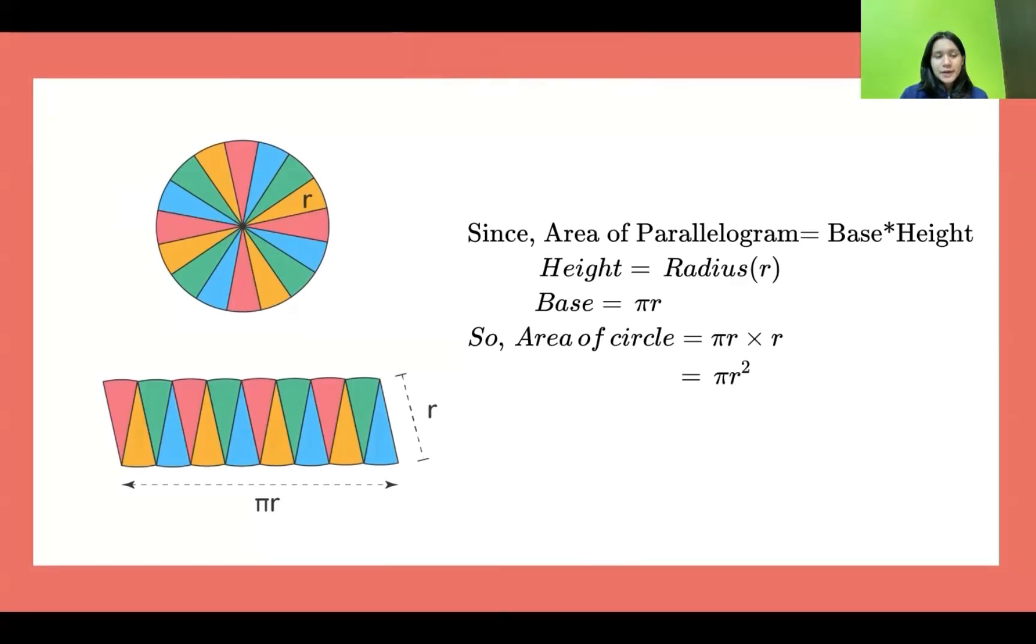In this way, by comparing the area of circle to the area of parallelogram, we can conclude that the area of circle equals πr².